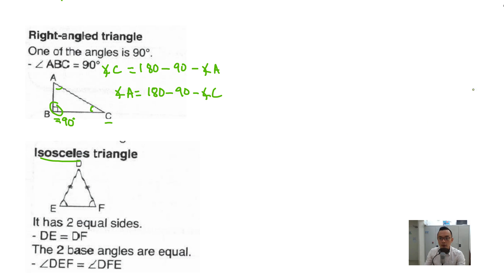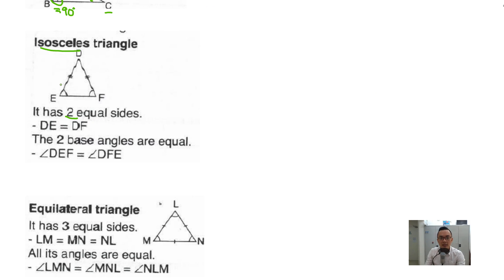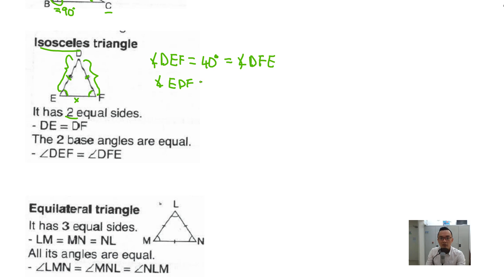An isosceles triangle has two equal sides — DE equals DF. What that means is these two angles are equal and the lengths of these two sides are also equal. So if angle DEF equals 40 degrees, then angle DFE also equals 40 degrees. Therefore, angle EDF equals 180 minus 40 minus 40, which equals 100 degrees. That's how you use an isosceles triangle.